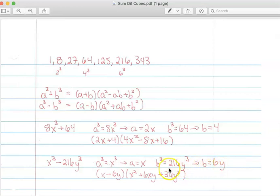And then I'm going to substitute these values into my formula for A and B. So, A minus B is going to be x minus 6y. A squared is going to be x squared. AB is going to be 6xy. And B squared is going to be 36y squared.